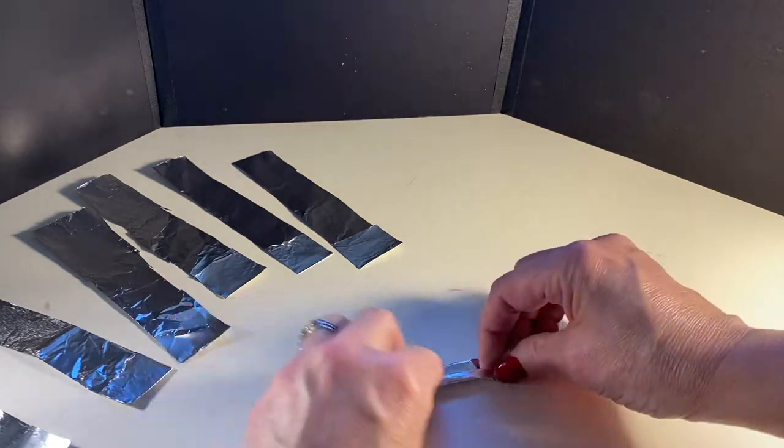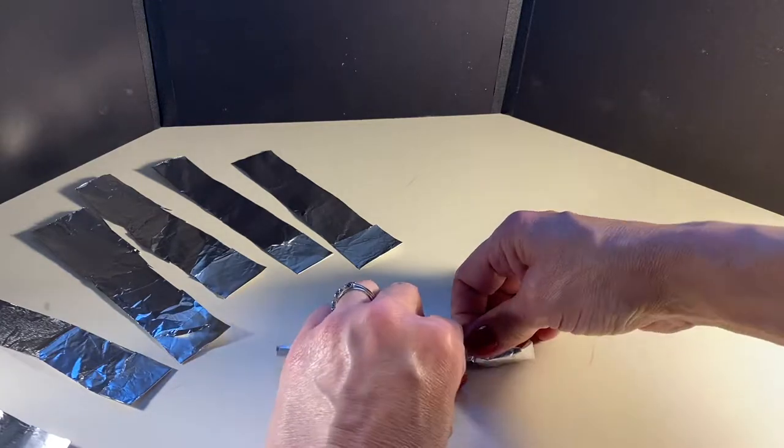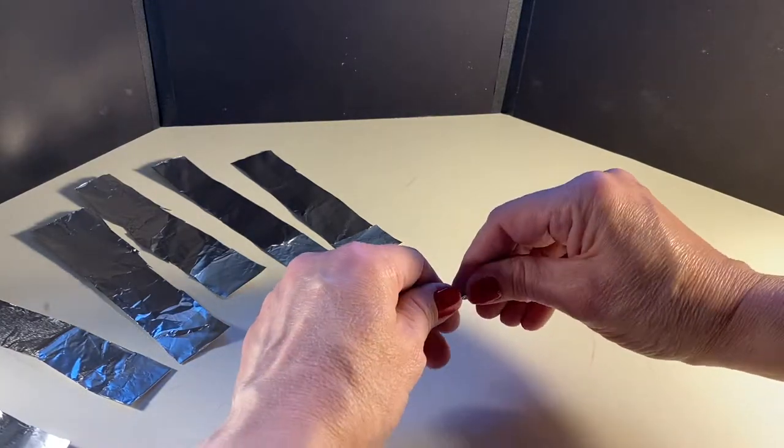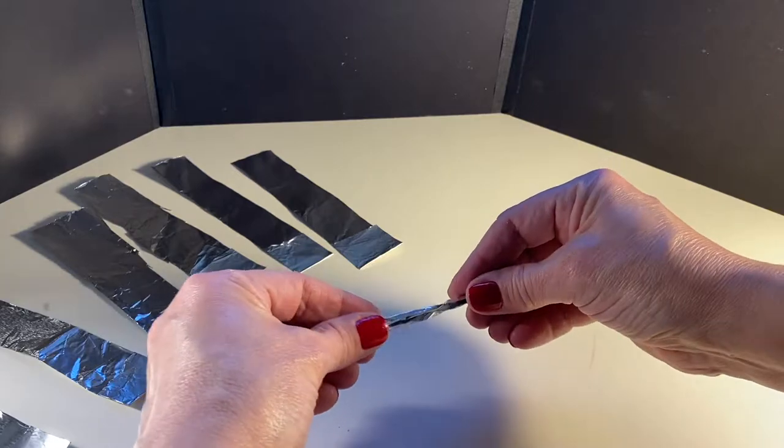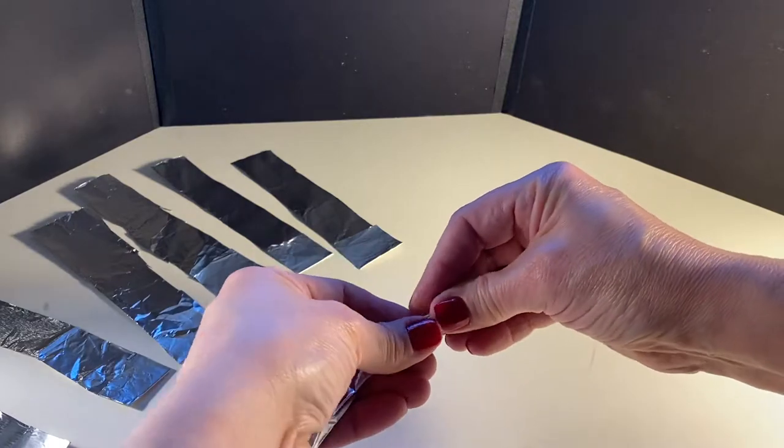About three or four times, and then kind of squish the aluminum foil tight to make a nice tightly pressed piece of aluminum foil. Try to keep it kind of round as you're doing that so it's not flat.